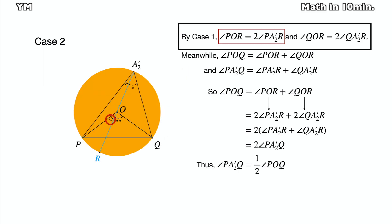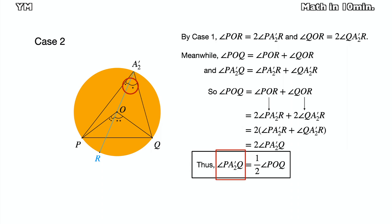angle POR is equal to twice angle PA2R and angle QOR is equal to twice angle QA2R. Then angle POQ equals angle POR plus angle QOR, and it is two times angle PA2R plus two times angle QA2R. Then this finally becomes twice angle PA2Q. So we proved that angle A2 is half of angle POQ.